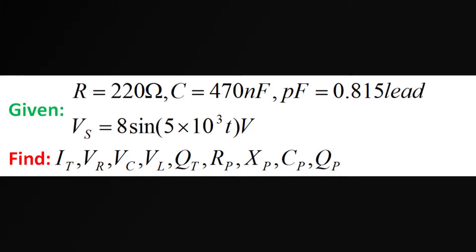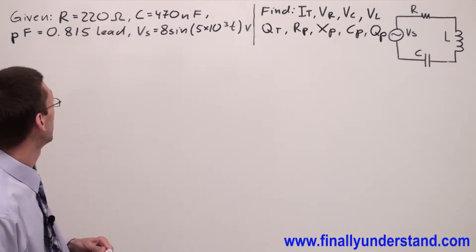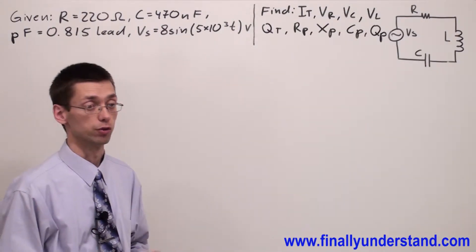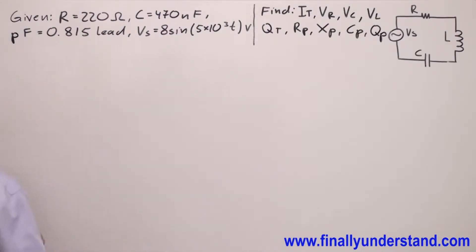We have another example on the board. In order to find I total I'm going to find Z total first. Please notice that we have given resistance and power factor.